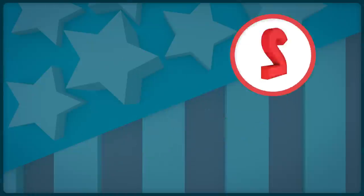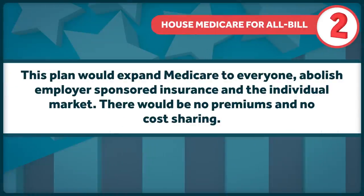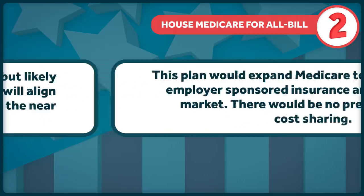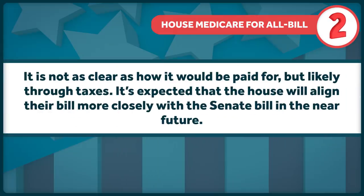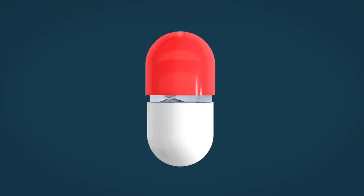The House Medicare for All bill, put forward by Representative Jayapal in the House Progressive Caucus, is very similar. It, too, would be universal by simply expanding Medicare to everyone. Abolish employer-sponsored insurance and the individual market. No premiums. No cost-sharing. Not as clear as how it would be paid for, though likely through taxes. It's expected that the House will align their bill more closely with the Senate bill in the near future.